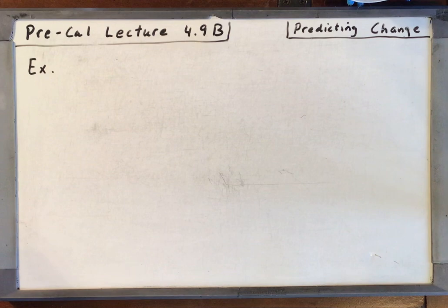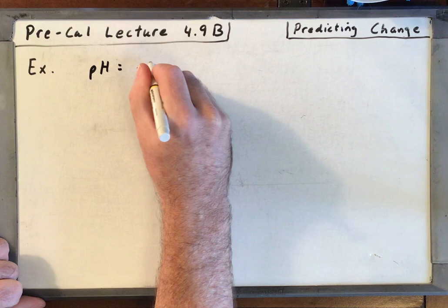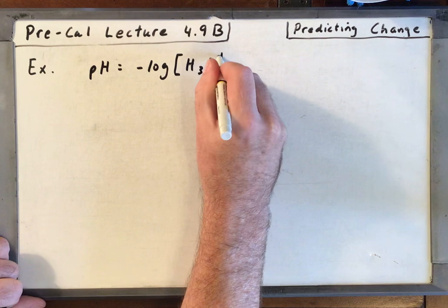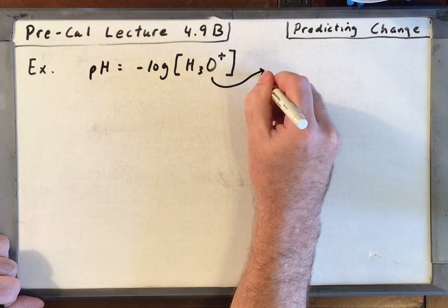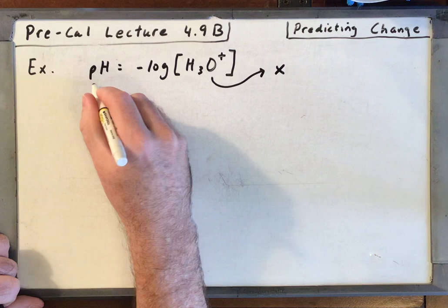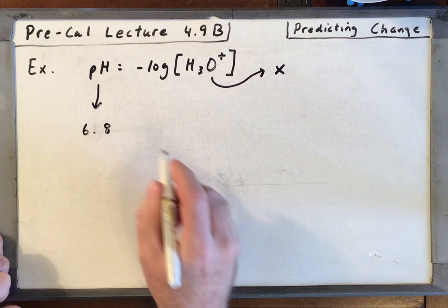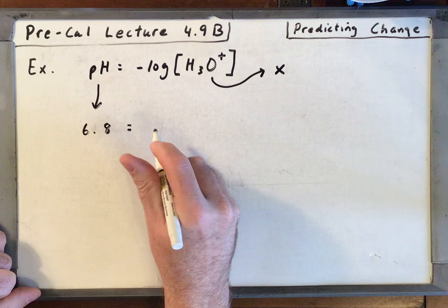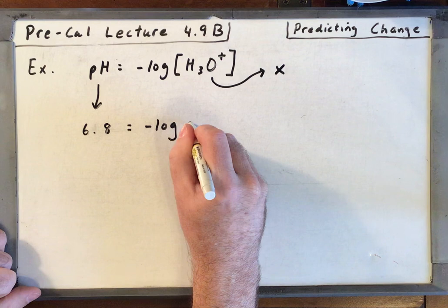So we've got our equation pH is equal to the negative log base 10 of the hydronium ion concentration. That's H3O+. Let's just call this X. The hydronium ion concentration. We know that the pH from the problem is 6.8. All right, so that's a little bit acidic. Anything below 7 is acid. Above 7 is a base. So we've got the negative log base 10 of X.